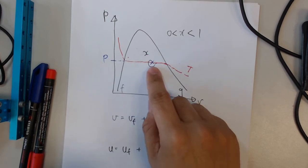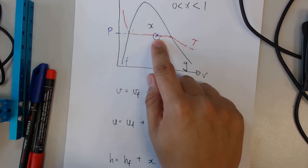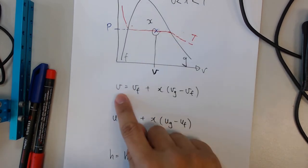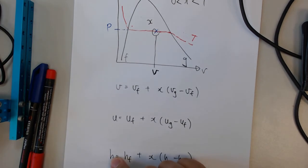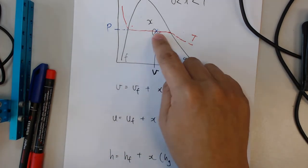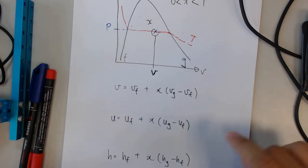So my X will be 0.7. So based on the dryness fraction, you will be able to calculate out the specific volume, specific internal energy, and specific enthalpy at this state, using these three sets of equations.